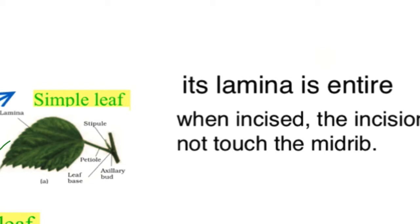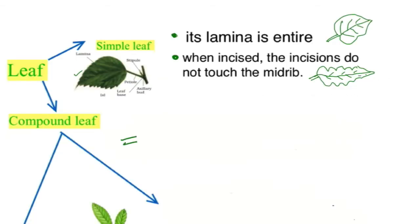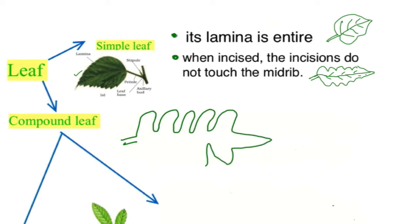In a simple leaf, when incised, the incision does not touch the midrib. In a compound leaf, the leaf lamina is incised and that incision reaches up to the midrib. When the incision reaches the midrib, these are called compound leaves.